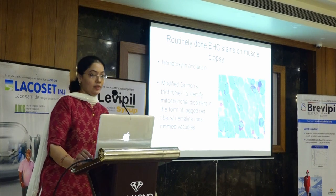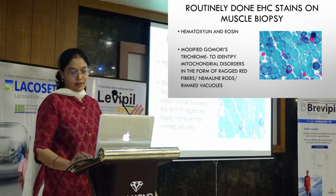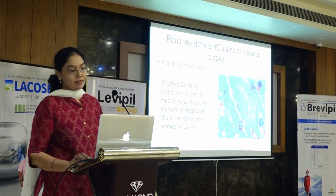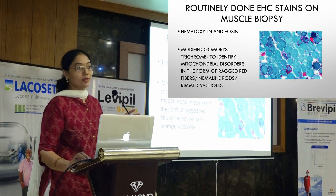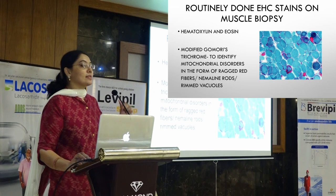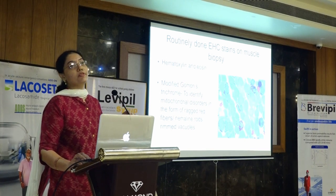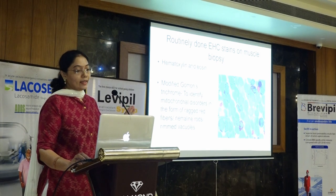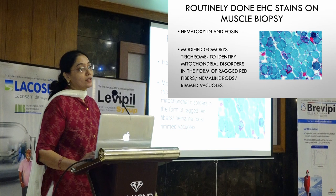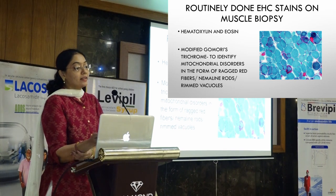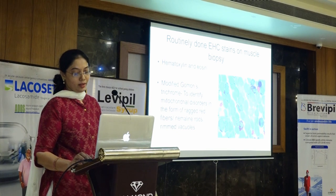Let me tell you what stains we perform if you give us fresh muscle. One would be the Modified Gomori Trichrome which stains the mitochondria. Any mitochondrial disorder you want us to diagnose, we would want to do this. The only problem is if there was formalin exposure — this stain is very sensitive to formalin; even a little vapor coming in contact with the biopsy will mean this stain will never work. In mitochondrial myopathy you can see ragged red fibers. It can also be used to identify Nemalin rods in Nemalin rod myopathy, as well as rimmed vacuoles as seen in distal myopathies or sporadic inclusion body myositis.